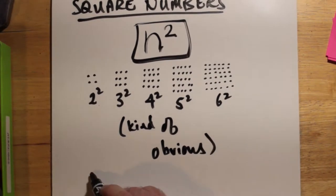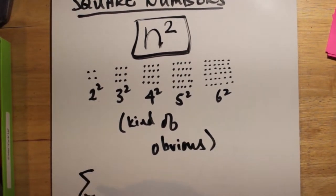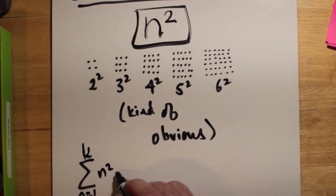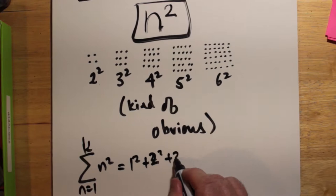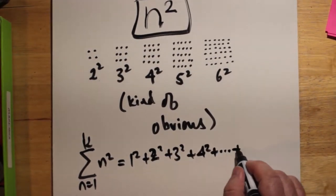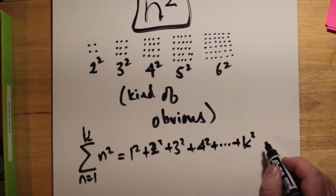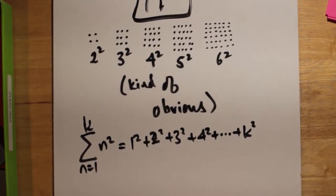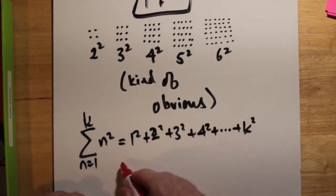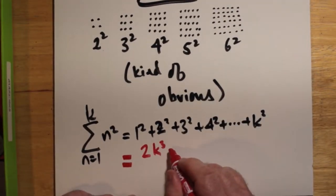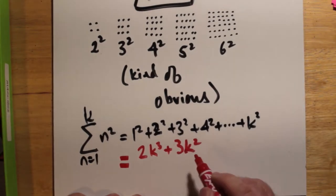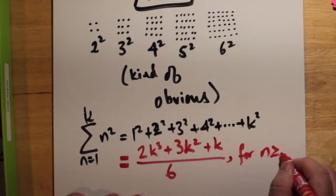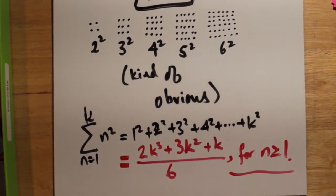But is there a shortcut formula? Well, after looking around a little bit, I was able to find a shortcut formula. It does exist. And I'm about to show it to you. This is the summation of all the perfect squares up to k squared, or some upper limit, whatever limit you like. And this works out to 2k cubed plus 3k squared plus k all divided by 6. And that's for any n greater than or equal to 1.